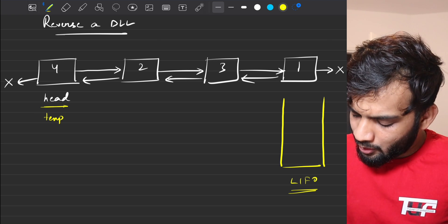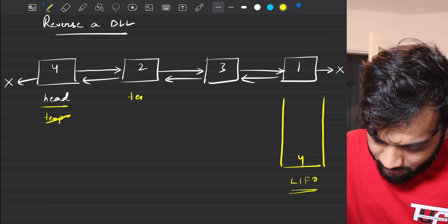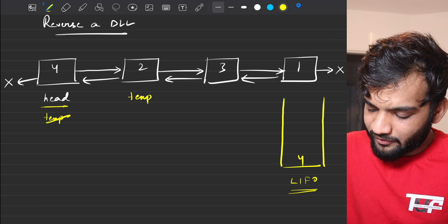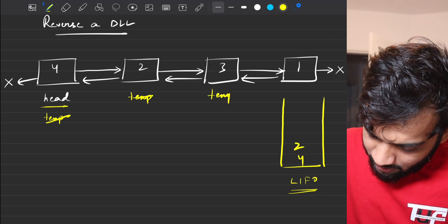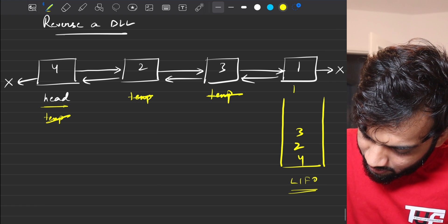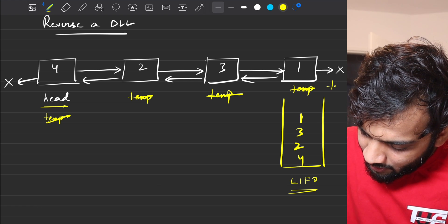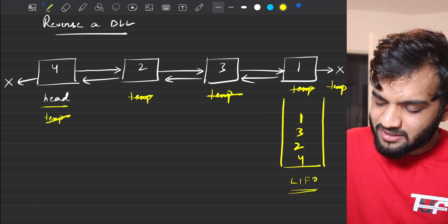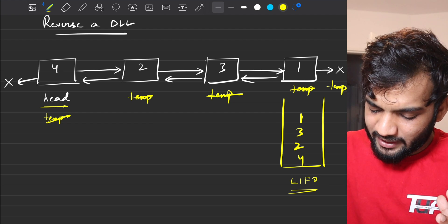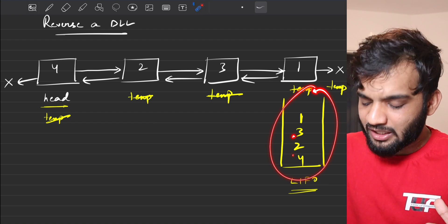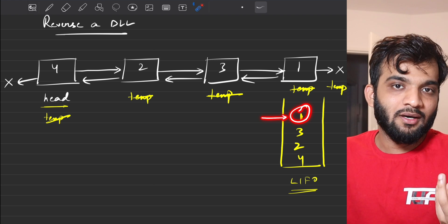Whatever is the value at the temporary pointer, push it into the stack and then move the temporary forward. Keep pushing each value into the stack and advancing until the temporary reaches null. So the stack ends up with values 1, 3, 2, 4, with 1 at the top of the stack.